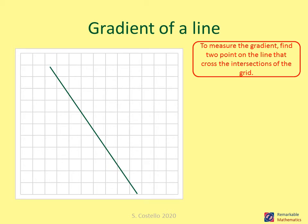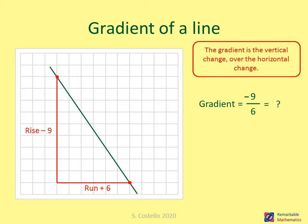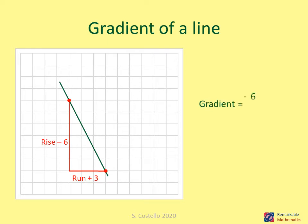To measure the gradient, find two points on the line across the intersections of the grid exactly. The gradient is the vertical change over the horizontal change. Here the vertical change is a rise of minus nine and a run of six, so the gradient is minus nine over six, which simplifies down to minus three over two.